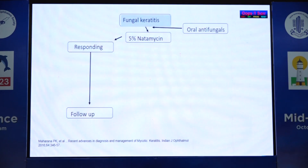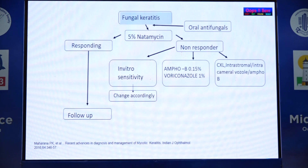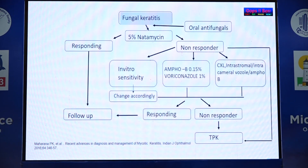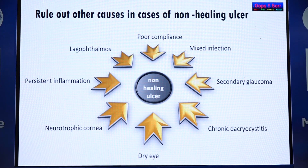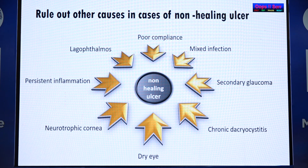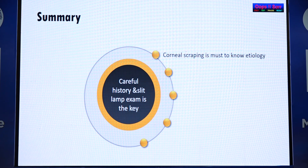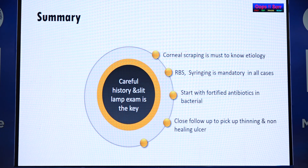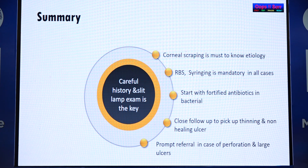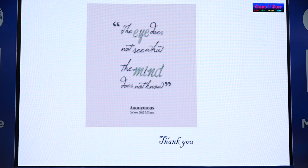In fungal keratitis, start with 5% natamycin. For non-healing cases, proceed to intrastromal and intracameral voriconazole. In non-responding cases, proceed to therapeutic penetrating keratoplasty. Always rule out other causes of non-healing ulcers such as poor compliance, associated chronic dacryocystitis, and dry eye. In summary: corneal scraping is a must; RBS and syringing are mandatory; use combination therapy with fortified antibiotics; close follow-up and prompt referral in case of perforation or large ulcers.